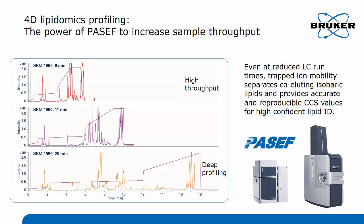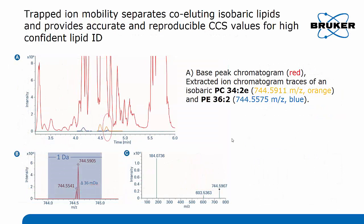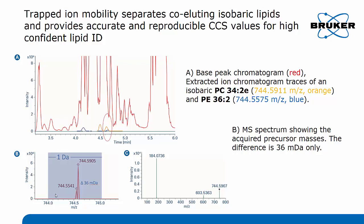Higher throughput means you have less time to separate the lipids on the chromatographic domain, and the challenge is that isobaric lipids can easily coelute. This is actually what we also found in our data when we decreased the analysis time to six minutes. You see in red the base peak chromatogram trace, and highlighted here are two extracted ion chromatograms of isobaric lipids.